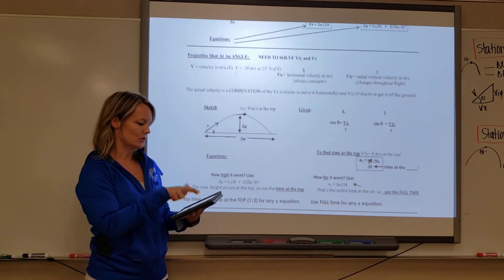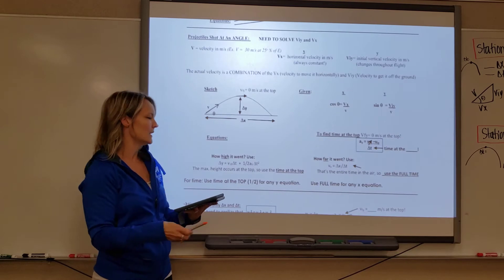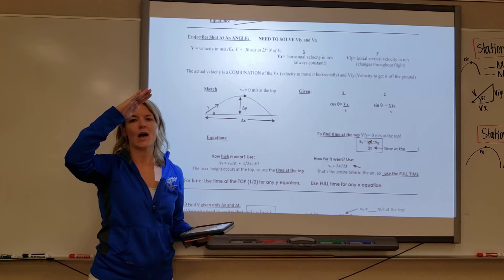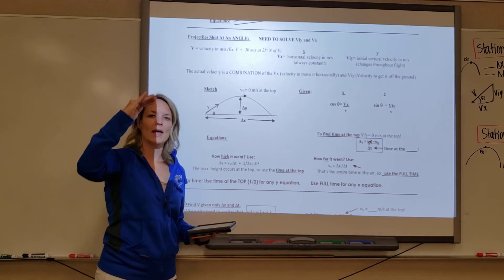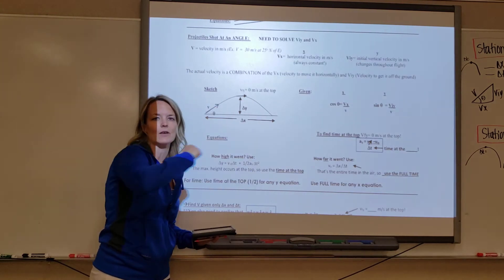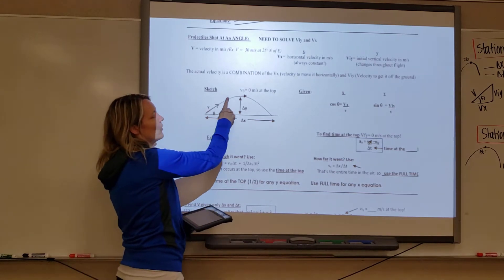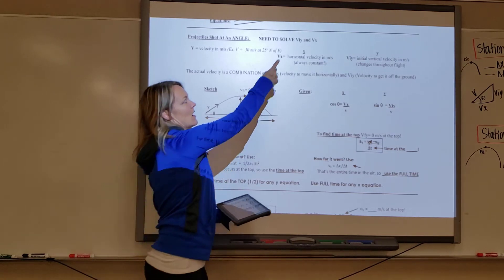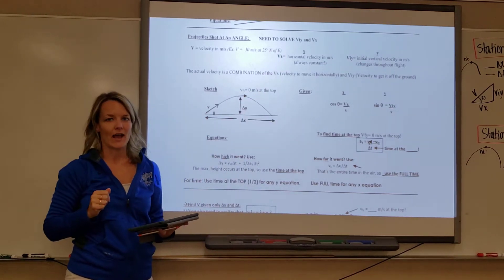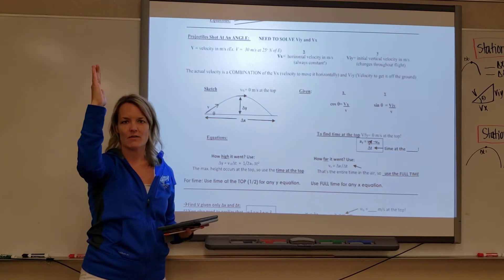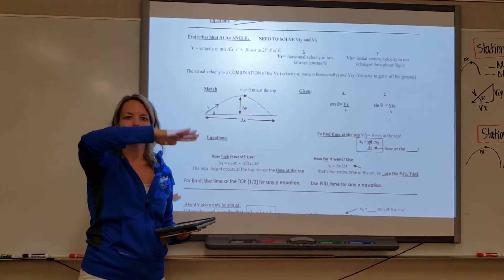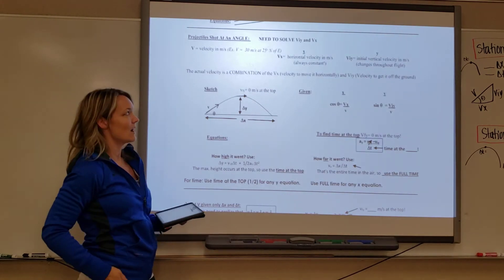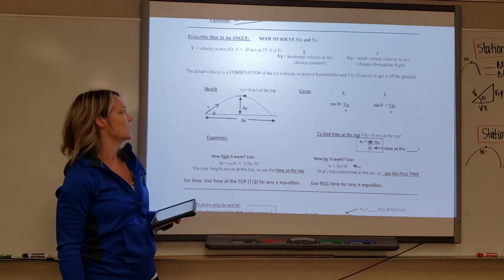The second type of projectile is one in which you start at the ground, get kicked, shot, or thrown up at an angle, it hits a peak, and then falls back down. So we have this full range of motion. These are the ones where we have to solve for v_iy and v_x. In order to get off the ground you need a velocity in the y direction, and to move to the side you need a velocity in the x direction — neither of those will be equal to zero.